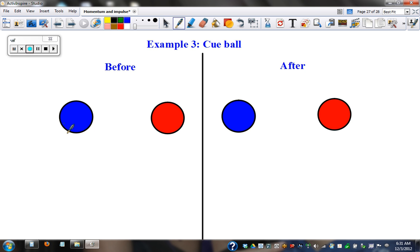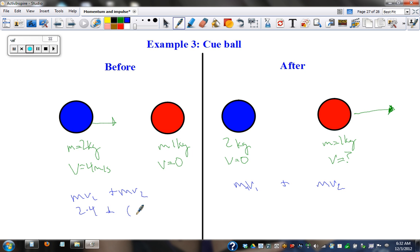Okay, cue ball example. We'll say this mass is 2 kilograms. This mass is 1 kilogram. This velocity is 4 meters per second. This velocity equals 0. After the collision, this velocity equals 0, and now the 2 kilogram ball is going to be moving at 0. Sometimes you've seen this if you've played pool, and this ball is going to get shooting off. What's this ball's velocity? Well, we've got our before and after. Let's use our formula: MV1 plus MV2 equals MV1 plus MV2 after.